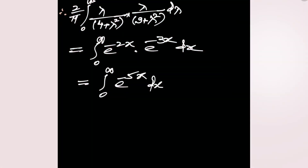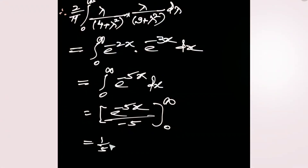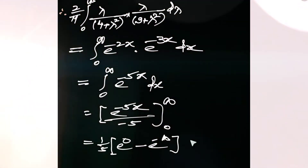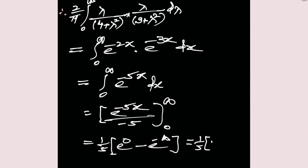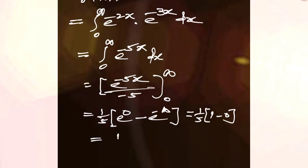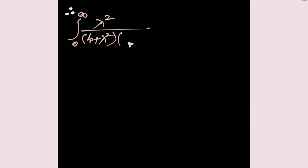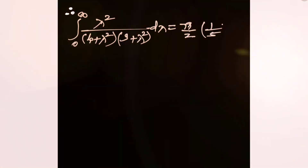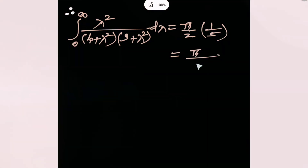The right-hand side is the integral of e^(−5x), which equals [e^(−5x) / (−5)] evaluated from 0 to infinity, giving 1/5. Since e^(−infinity) is 0 and e^0 is 1, we get 1/5. Therefore, the integral from 0 to infinity of lambda² upon (4 + lambda²)(9 + lambda²) d-lambda equals (π/2) times (1/5), which is π/10.